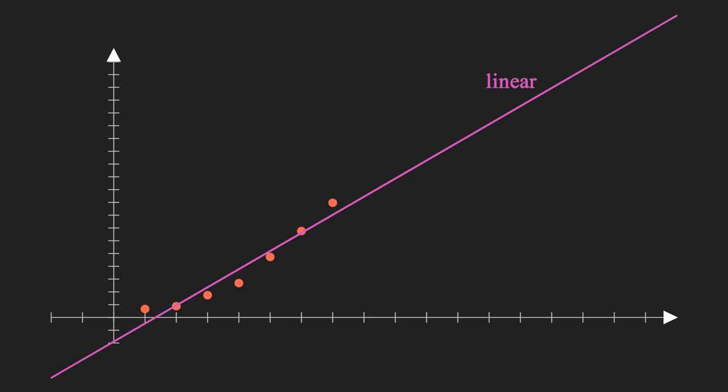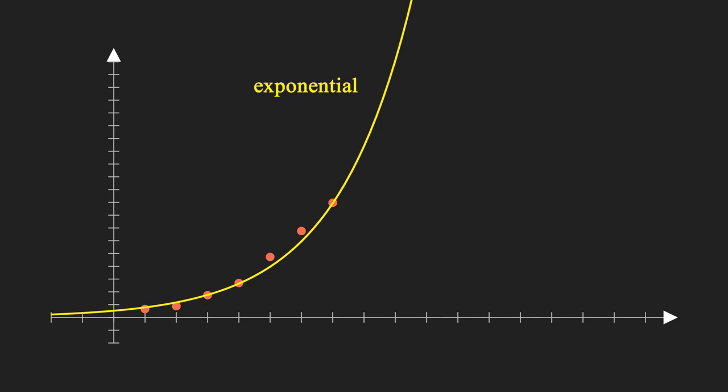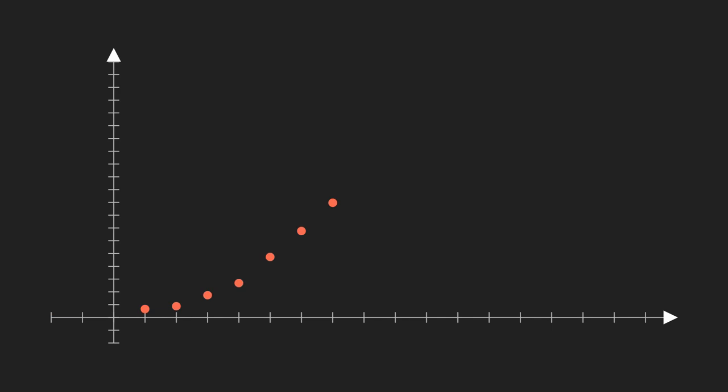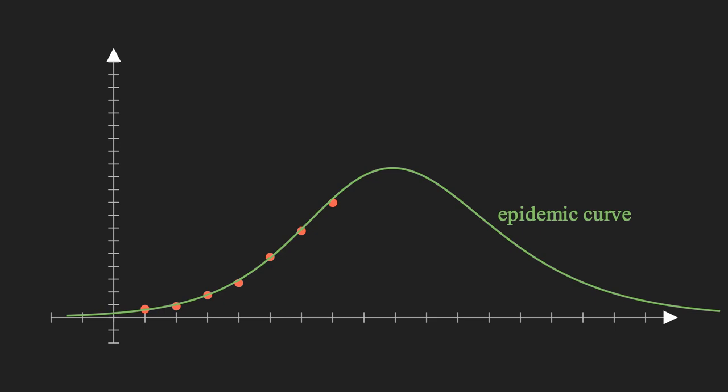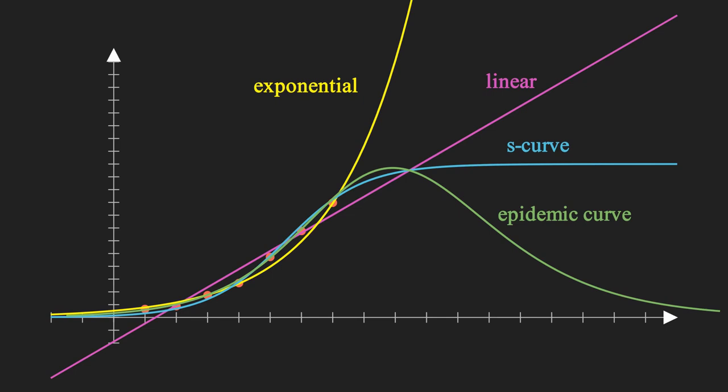But if we suspected that the system was being generated by some sort of compounding growth process, then maybe we'd try to fit an exponential curve to the data. Alternatively, if we thought the system was more like a technology adoption process, then we might expect it to follow some kind of s-curve into the future. And finally, if we knew that the data was of infection numbers, then we might expect the future progression to follow a classic epidemic curve. From the same set of initial data, these four different kinds of models give radically different predictions for where the future data points are expected to be.